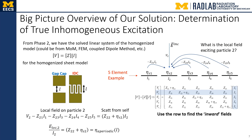What we ask ourselves is: what is the actual local electric field exciting particle number two, for example? That electric field is the incident field plus the field scattered by all its neighbors onto that element. We do not consider the field scattered by element number two itself — the self-scattering. We can obtain this information from the solved linear system. Looking at row number two of the solved linear system, we move all terms except the self term to the left side of the equation. What you end up with is the local electric field, which is the incident field plus the field scattered by all its neighbors, equal to the loaded sheet impedance multiplied by the current driven through that element. Dividing both sides by the current driven through the element, we obtain the sheet impedance in the aperiodic environment: E_local divided by I_2 equals Z_22 plus Z_sheet_2, representing the local sheet impedance in the aperiodic environment directly from the homogenized model.